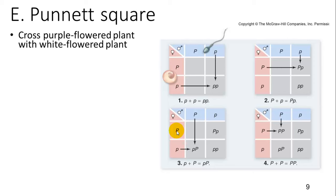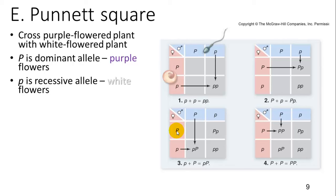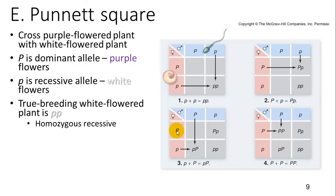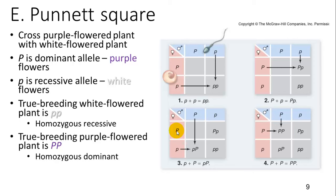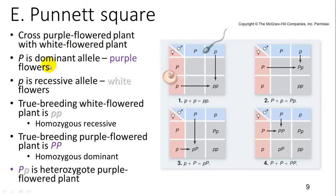One way to predict the probability of phenotypes or genotypes is by looking at a Punnett square. If you cross a purple flowered plant with a white flowered plant, big P is the dominant allele for purple and little p is the recessive allele for white. A true breeding white flowered plant is little p little p. A true breeding purple flowered plant is big P big P. You write the alleles of each parent along the sides and fill in the squares.